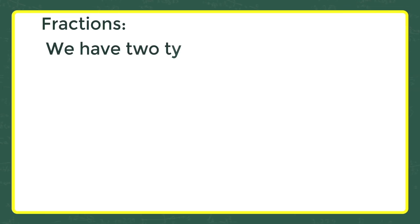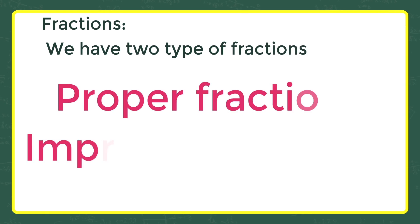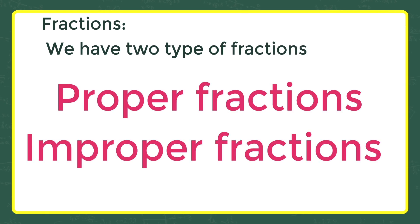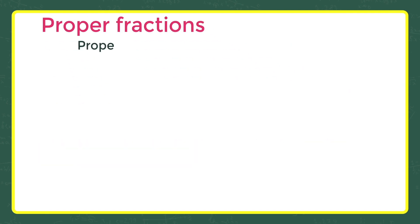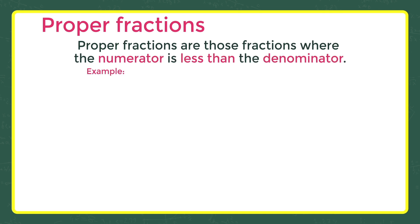What is fraction? We have two types of fractions: proper fractions and improper fractions. Proper fractions are those fractions where the numerator is less than the denominator. Example: 6 by 7.